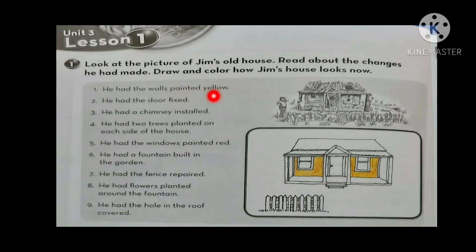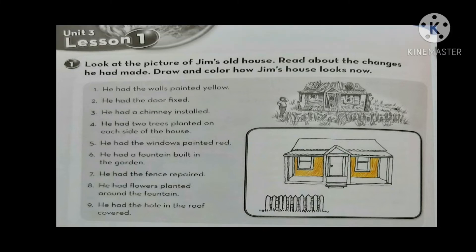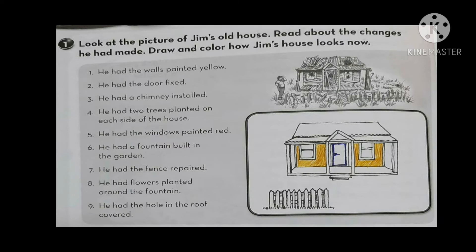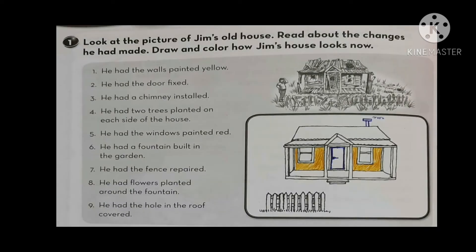He had the walls painted — he didn't do it himself. Someone painted the walls yellow for him. He had the walls painted yellow. Next, he had the door fixed — let's fix the door. We fixed the door for James. Then, he had a chimney installed. This is the chimney — he had a chimney installed here.